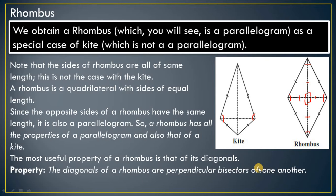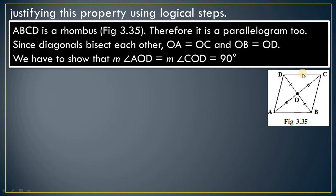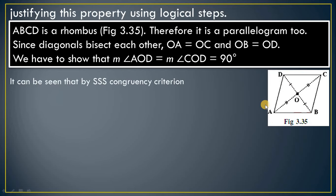The most useful property of a rhombus is that its diagonals are perpendicular bisectors of each other. In a general parallelogram, diagonals bisect each other but are not perpendicular. To prove this property, note that since a rhombus is a parallelogram, the diagonals bisect each other — so OD equals OB and AO equals OC. We need to show that angle DOA equals 90 degrees.